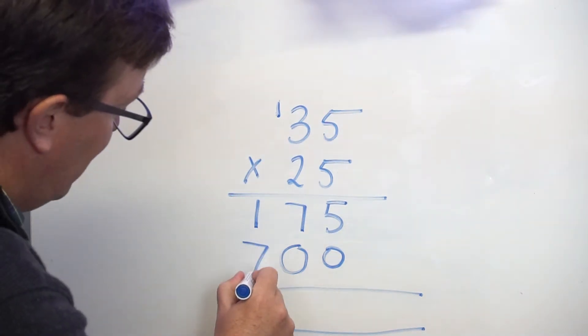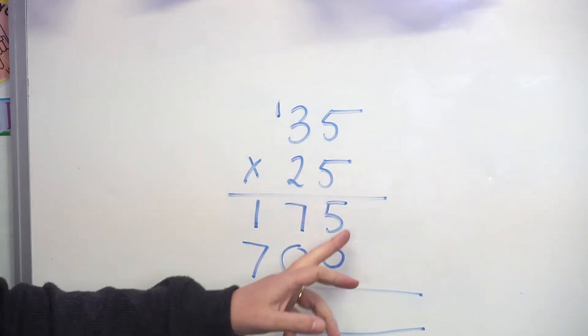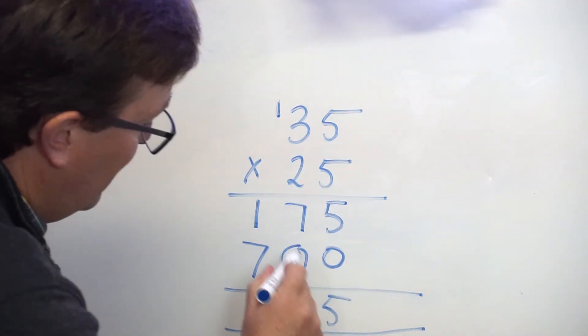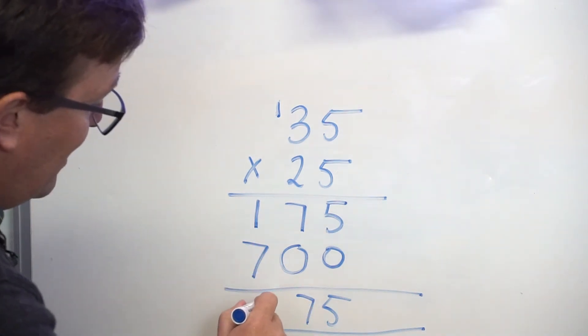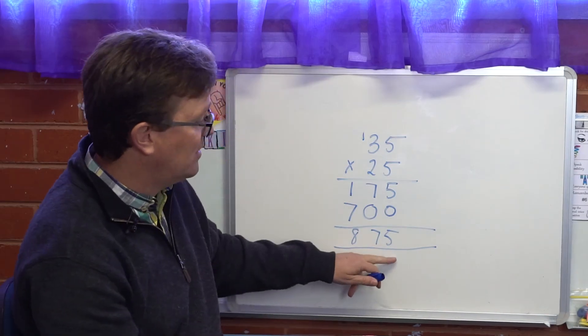So I put my 7 in there. Now I have to add them together. 5 and 0 is 5, 7 and 0 is 7, 1 and 7 is 8, so the answer is 875.